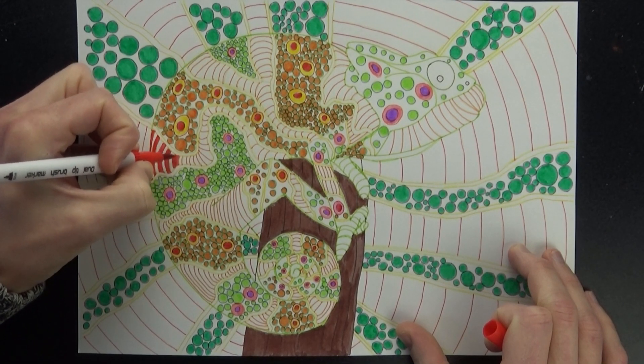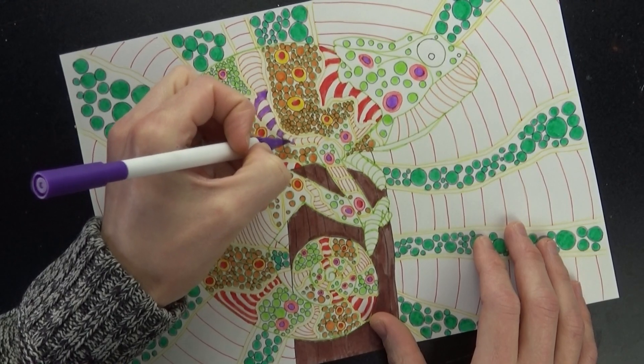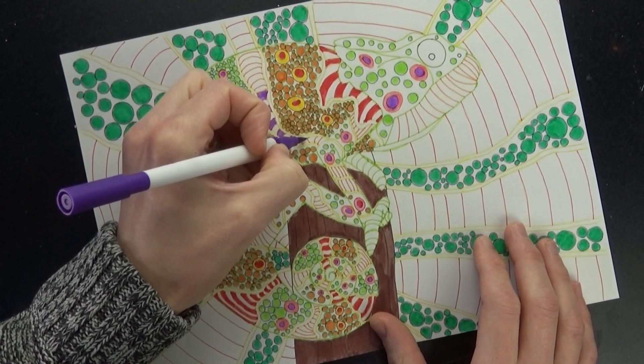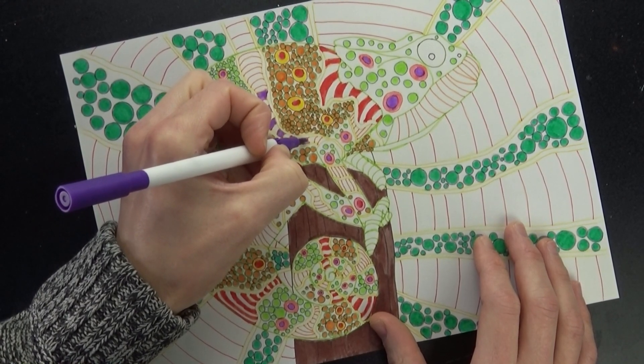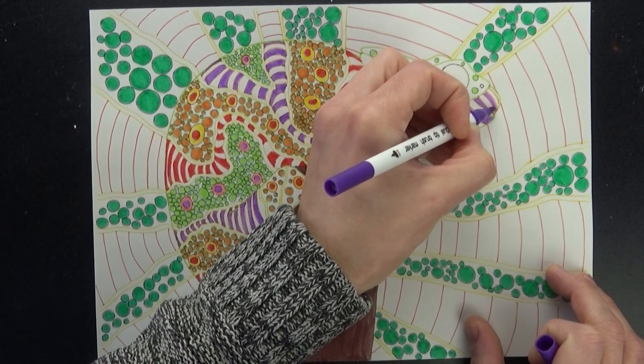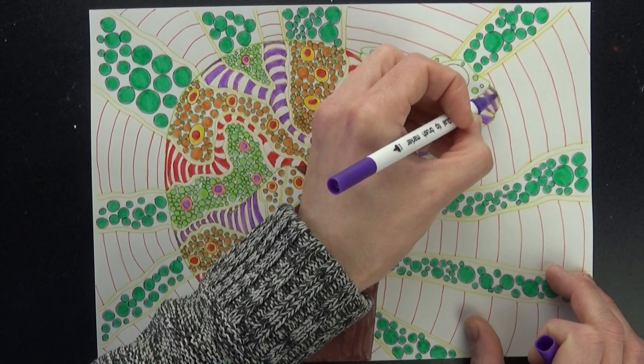Now remember if you are printing off a design at home, chances are you'll be using just normal printer paper which has a habit of bleeding if you use markers like I am here. So I'd recommend using a ballpoint pen for small detailed areas, otherwise you could find the tiny intricate areas just mush into one big blob.